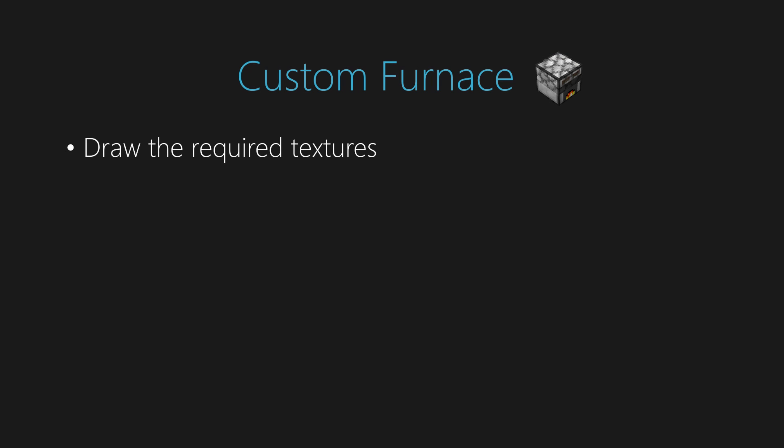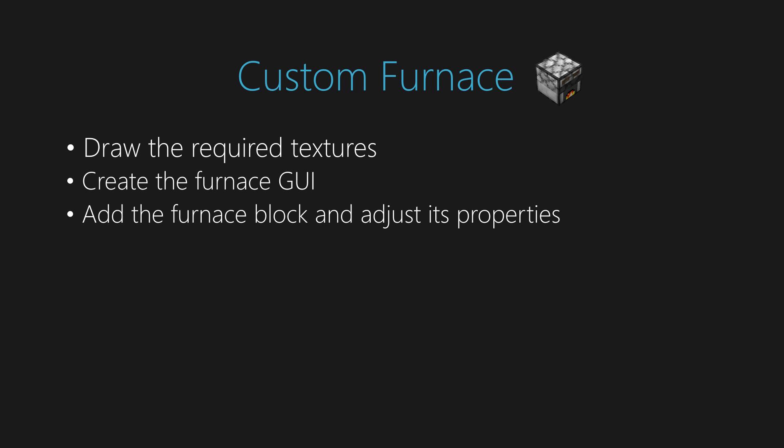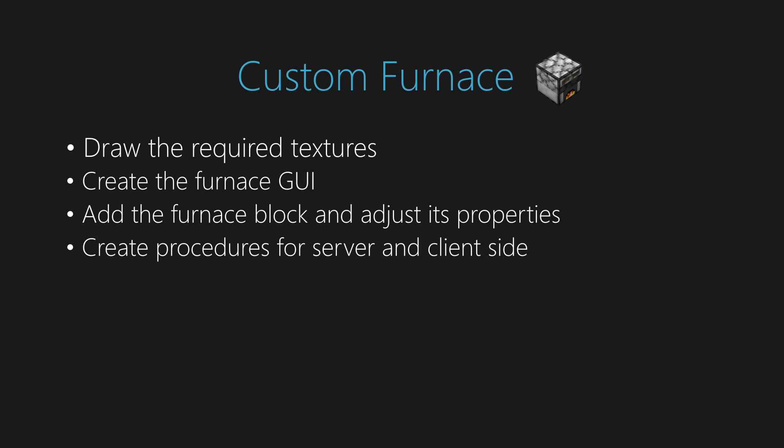First, we need to create the textures, then we'll learn how to create a user interface for the furnace. Afterwards, we'll create the block and adjust its properties to work with the procedures. There will be two procedures: the first one will be used for smelting and the second one for special effects. I'll explain why it's good to have separate procedures instead of one later.